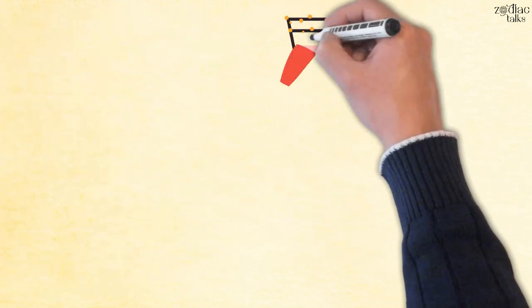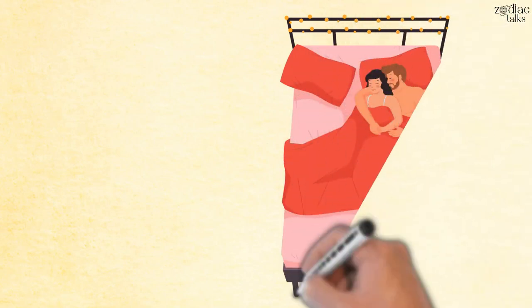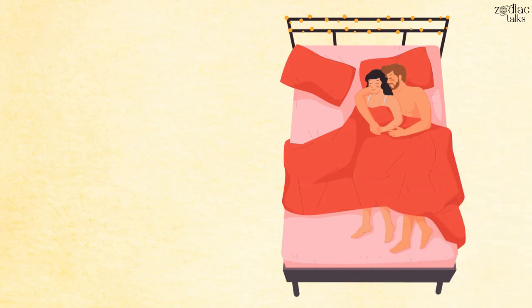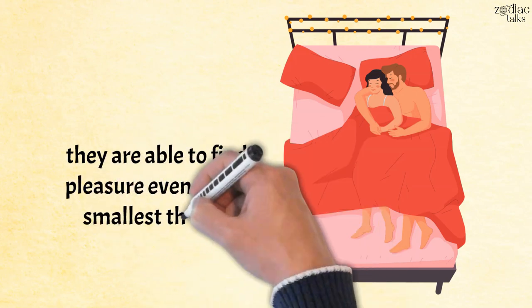If they manage to get over some small differences, they'll have a deep, intimate connection, as both signs value physical touch and affection. Once they're involved in this, they're able to find pleasure even in the smallest things.